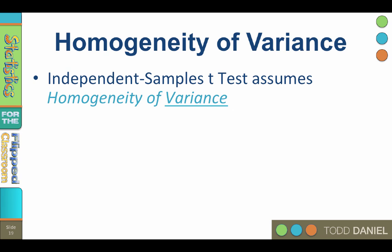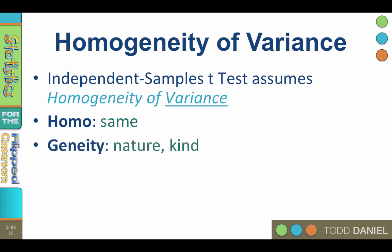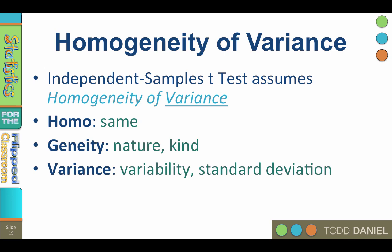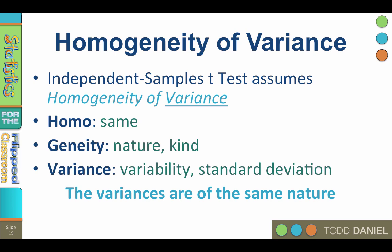Let's break down the word homogeneity. The word homo means same. Geneity refers to the genus, or the nature, or the type. So homogeneity means of the same nature. Variance refers to the variability in each group. Therefore, homogeneity of variance means that the variance in the groups is of the same nature, or that the two groups have the same kind of variability.